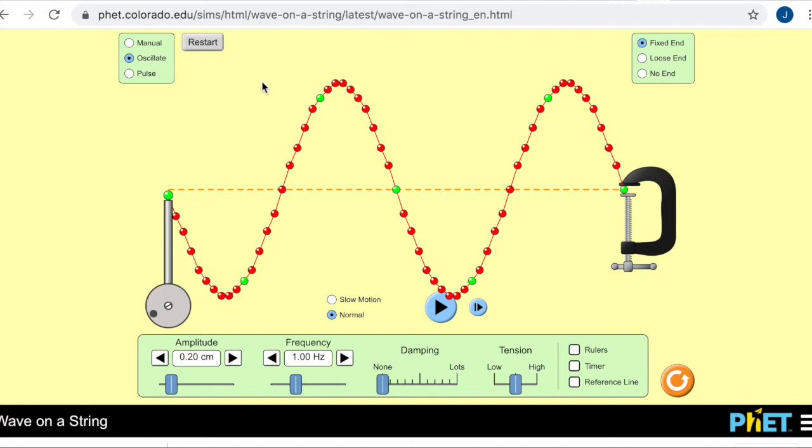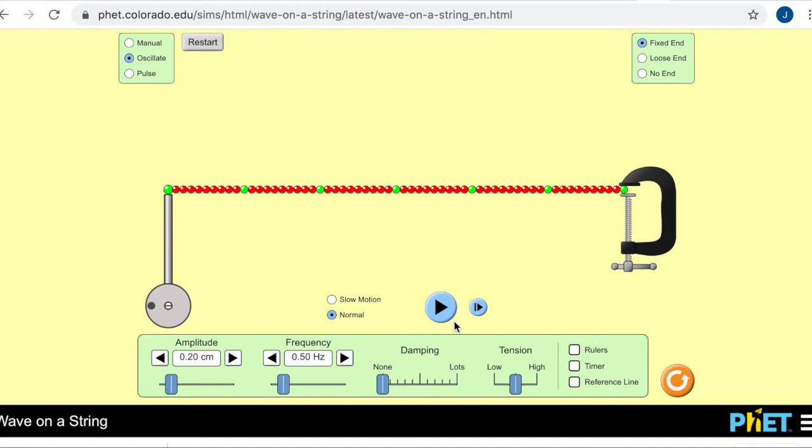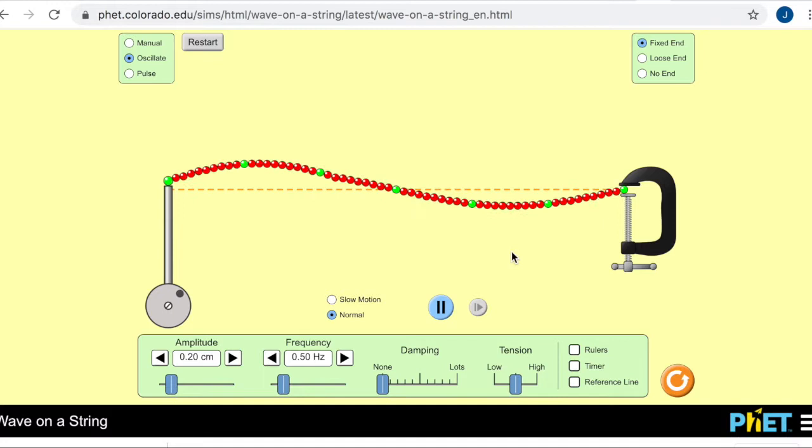Now over there, we will also cut the frequency in half. So let's try that here. Bring this down to 0.5. And then restart this and run. Let it develop a bit.